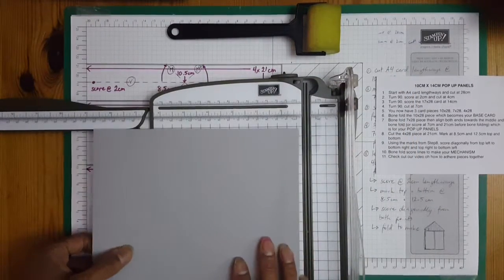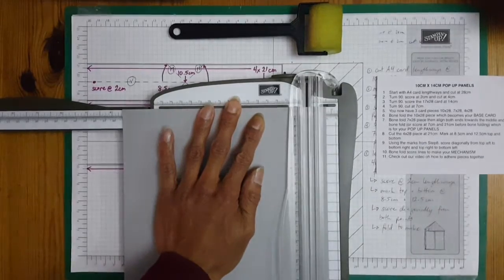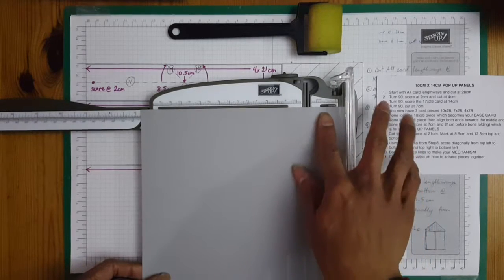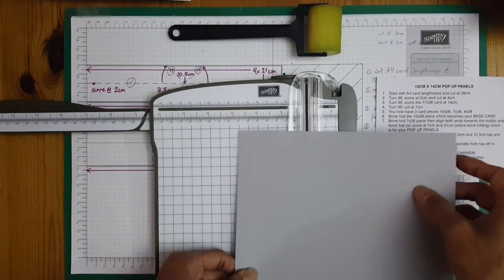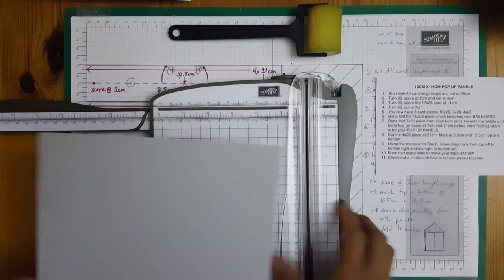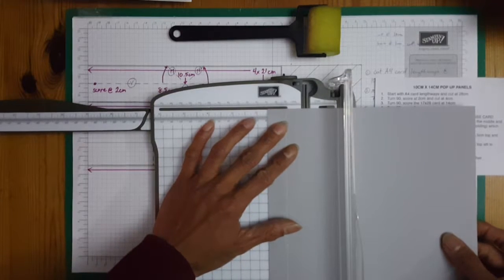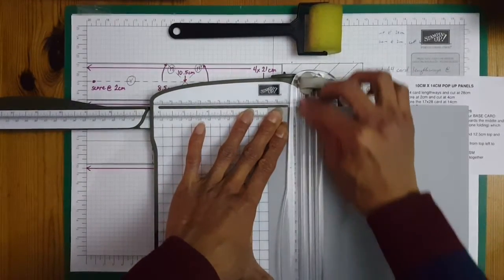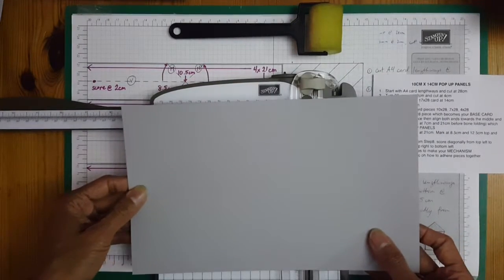Turn 90 degrees and score at 2 centimeters. And cut at 4. You can either turn it round and cut at 4 or use the right hand side and align that to 2 centimeters. I've just turned it round so I'll cut at 4. Score this card at 14 centimeters.